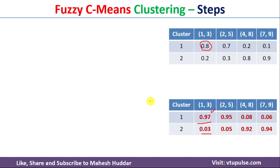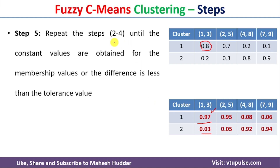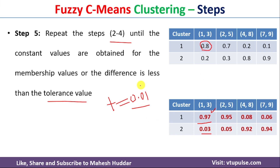Once you get the updated membership table in step 5, we need to repeat steps 2, 3, and 4 until the values become constant or the difference is less than the tolerance value. Let us assume the tolerance value equals 0.01, meaning the difference between the calculated value and the previous value should be less than 0.01. In this case, the calculated value is 0.97 and the previous value was 0.8, giving a difference of 0.17, which is much greater than the tolerance. So we go back and recalculate the centroid, distance, and update the membership values again and again until convergence.